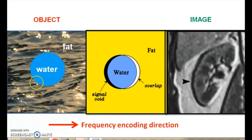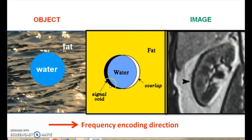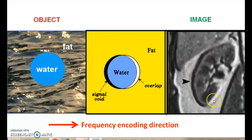The chemical shift difference results in spatial misregistration of the MRI signal. In the kidney example shown here, the misregistration creates overlap on one side — appearing bright — and a signal void on the other side — appearing as a black band. In this MR image, you can see the black band on one side and the white band on the other side, which is a classical example of chemical shift artifact. This always happens in the frequency-encode direction, wherever there is a fat-water interface.